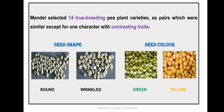The first character is seed shape. Seed shape has two contrasting traits: round shape and wrinkled shape. The next character is seed color. There are green seeds and yellow seeds — seed color is the character, and green and yellow are the two contrasting traits.